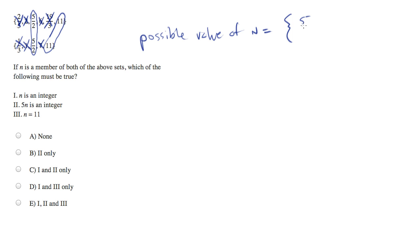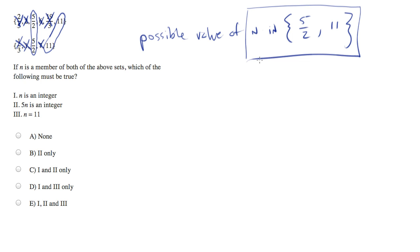So n is equal to 5/2 or 11 — or rather, let's say n is in that set. Now we can evaluate our rules. Is n an integer? Well, not necessarily, because it could be 5/2.